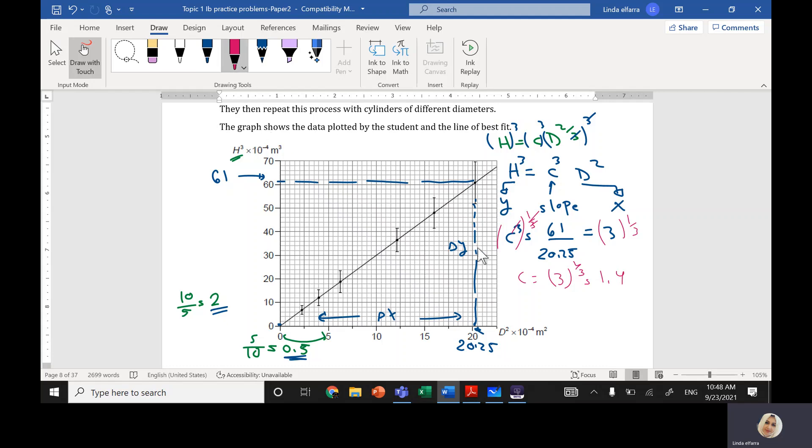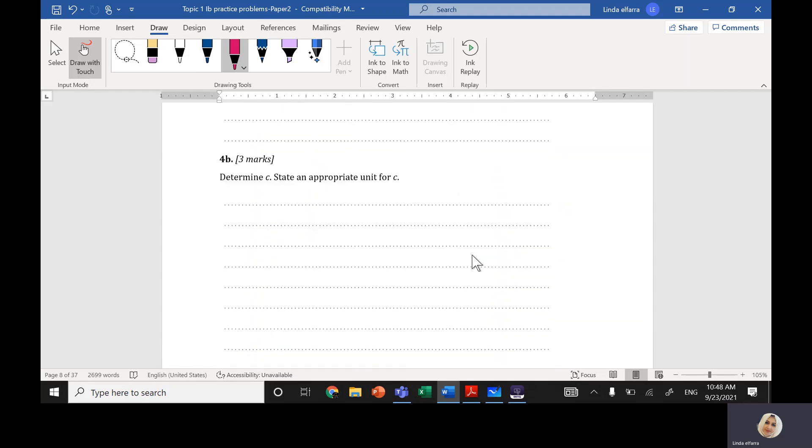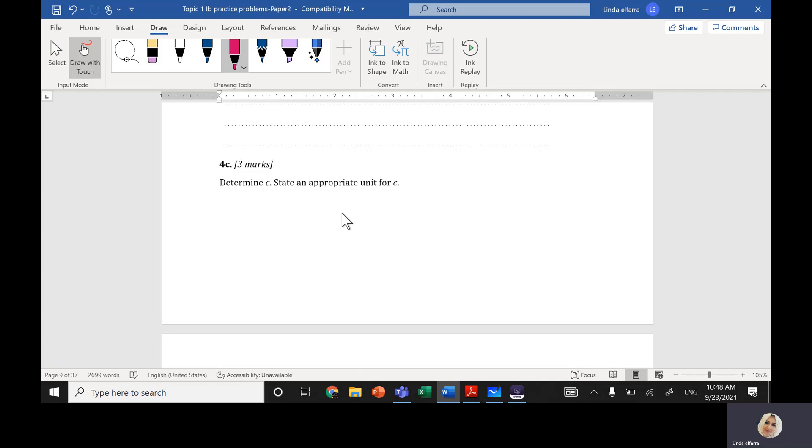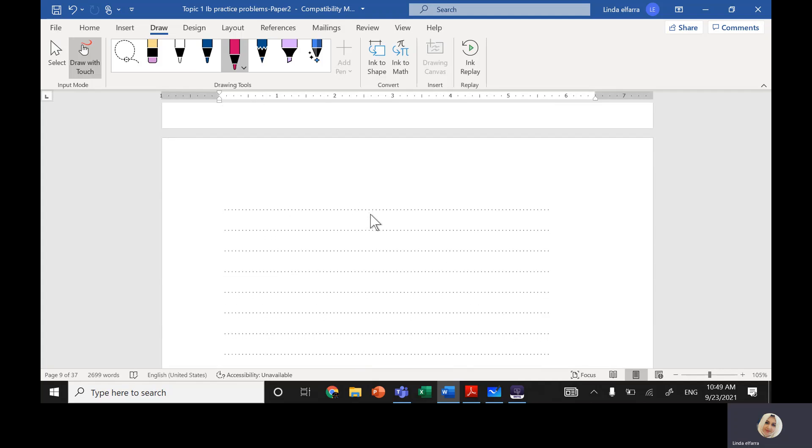Let's do it down here. State an appropriate unit for c. Now we know the equation: h cubed equals c cubed times d squared. And we know c cubed will be h to the power 3 divided by d squared. What is the unit for h? It's meter, so meter cubed. What is the unit for diameter? It's meter squared.